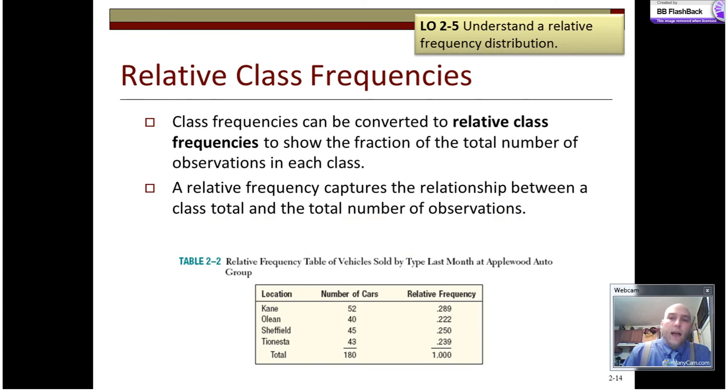Relative class frequencies show a fraction that occur in each class. And it will, relative frequency will capture the relationship between class total and the total number of observations. So in this case, this is that same qualitative data we counted before. It doesn't just have to be used for quantitative data that has intervals. We can also do it for qualitative data like this. Relative frequency is the frequency of a particular class divided by the total.